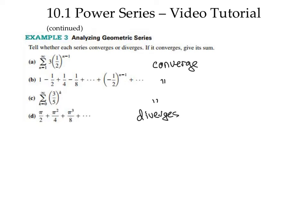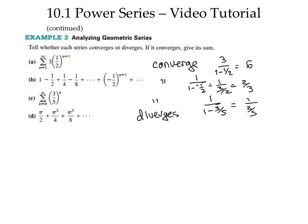What do the convergent series converge to? In the first, the first term a is 3 and r is 1/2, so a over 1 minus r is 3 over 1/2, which equals 6. In the second, a is 1 and r is negative 1/2, so 1 over 1 minus negative 1/2 is 1 over 3/2, which is 2/3. In the third, setting k equal to 0, the first term is 1 and r is 3/5, so 1 over 1 minus 3/5 is 1 over 2/5, which is 5/2 or 2.5.